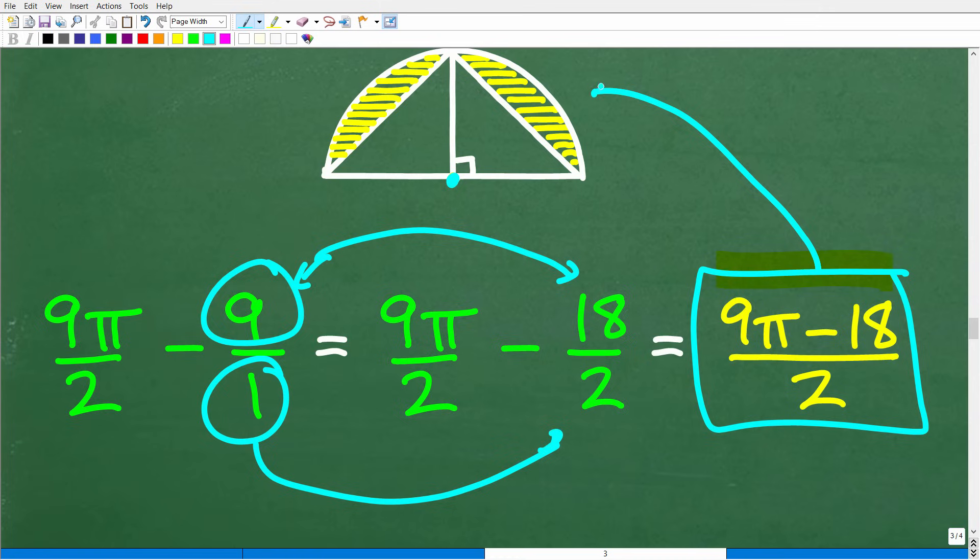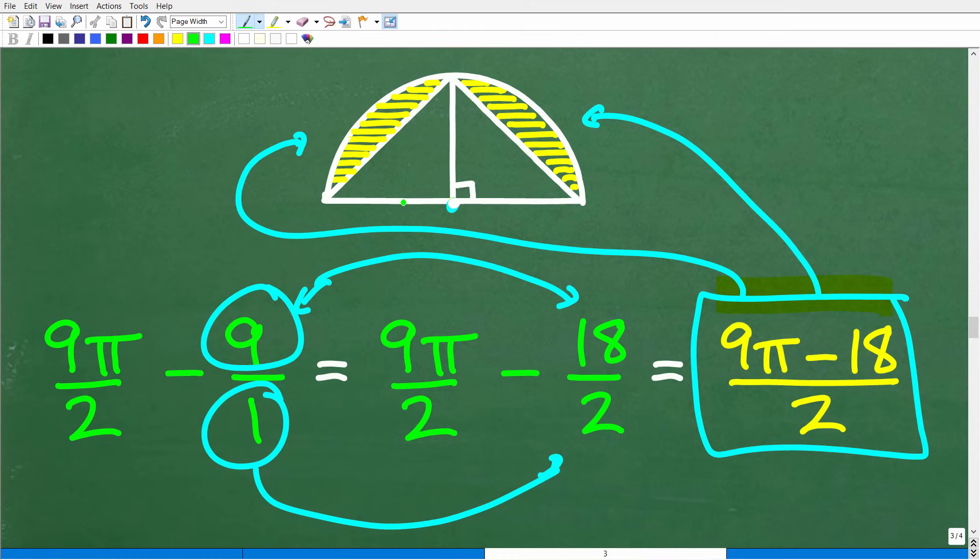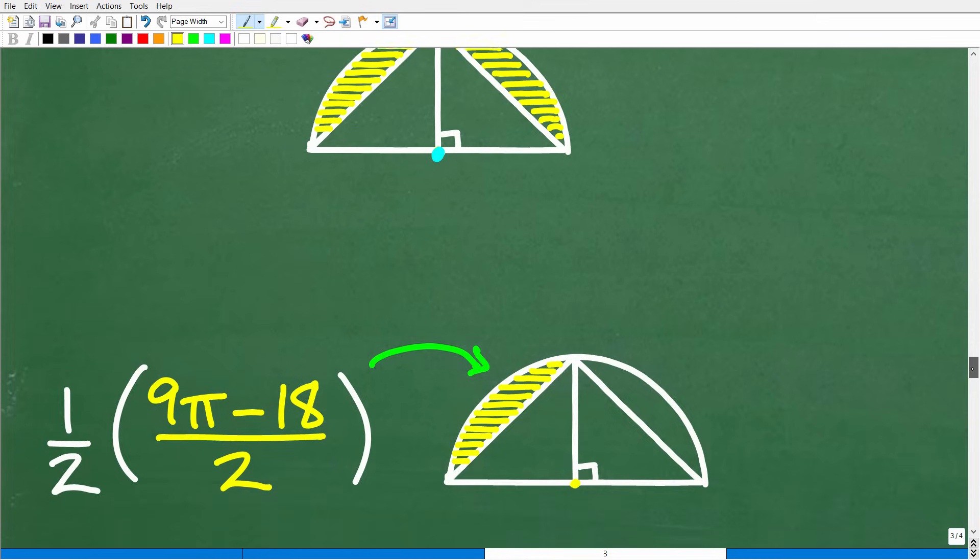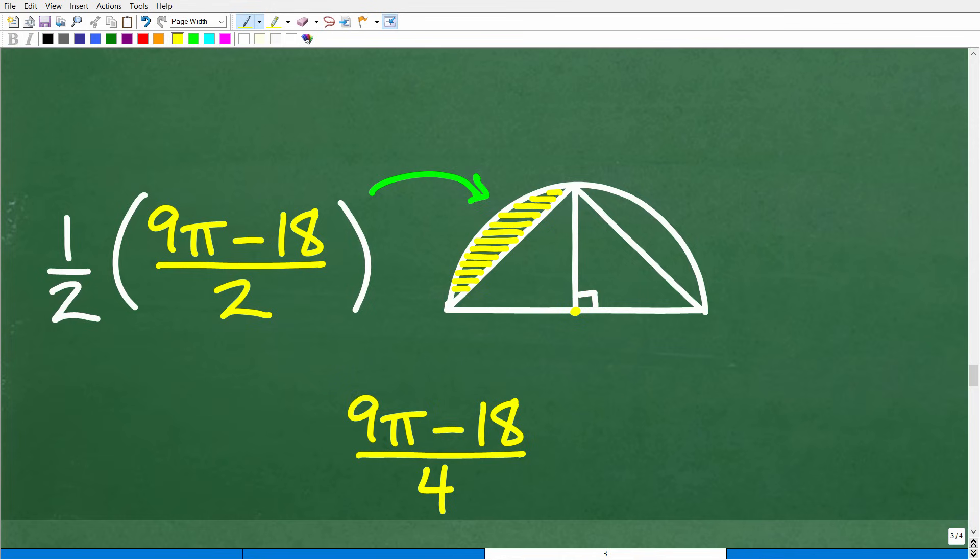We're almost done. This is the exact area of these two yellow sections, but we only need one of them. These areas are the same because these triangles are the same. That's an important note because if the triangles were different, this would be a different type of problem. All we have to do is take half of this answer. 9 pi minus 18 over 2 is the area of both sections. We just need half of that, so we'll multiply by one half. We're multiplying fractions, so one half of 9 pi minus 18 over 2 is 9 pi minus 18 over 4. That is the area of this yellow section, the exact answer in units squared.